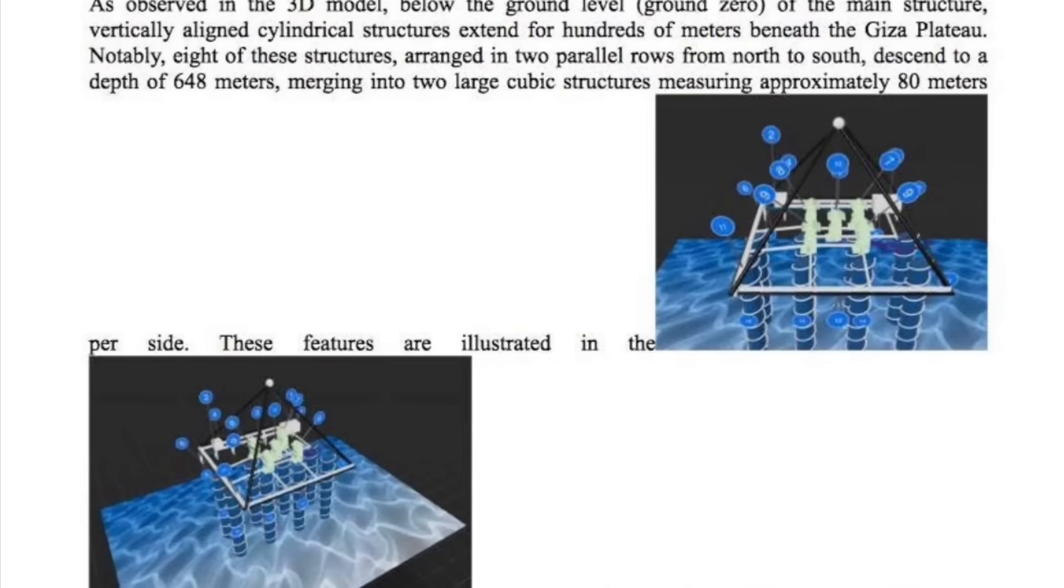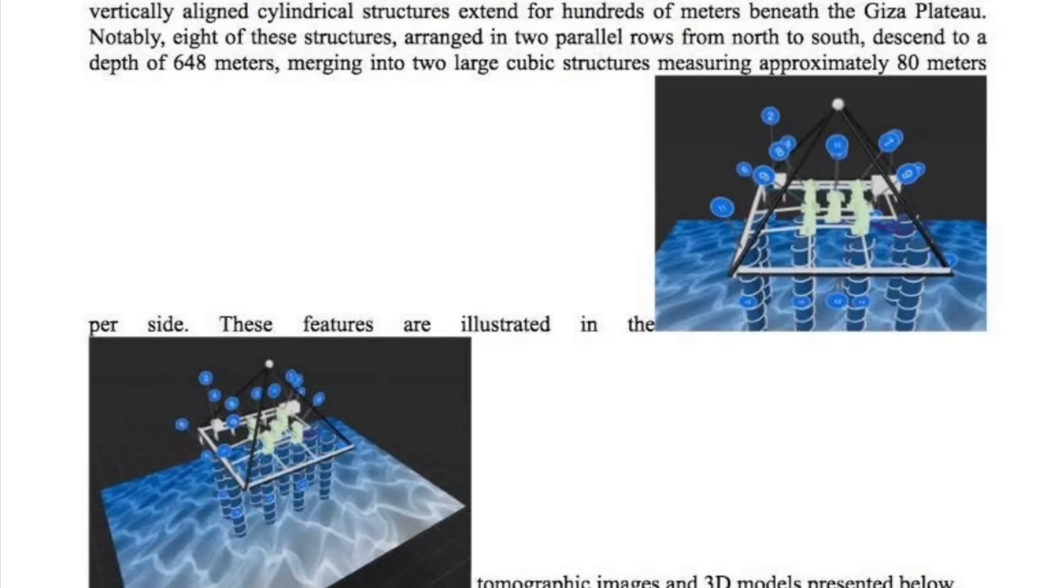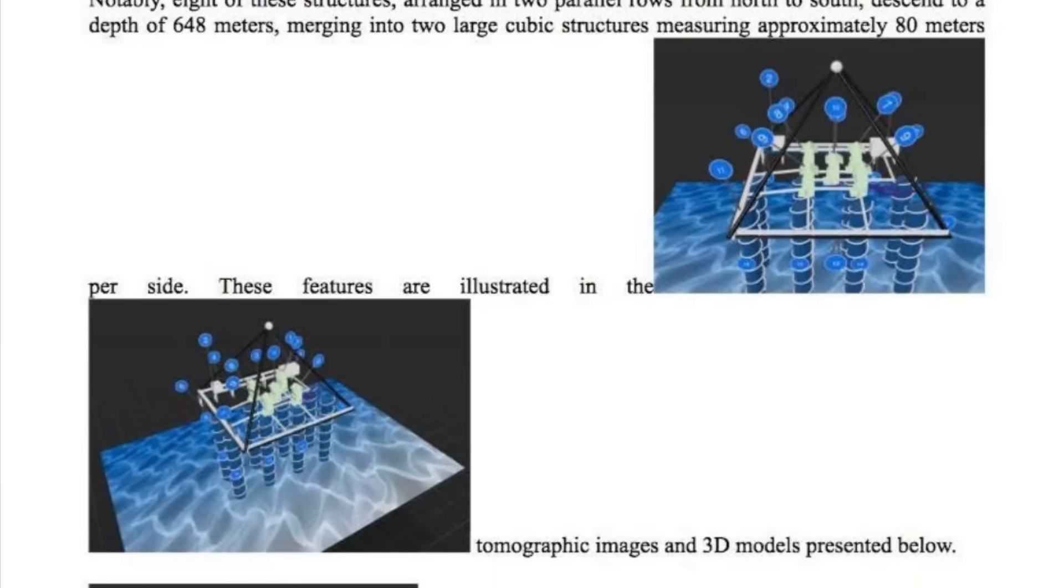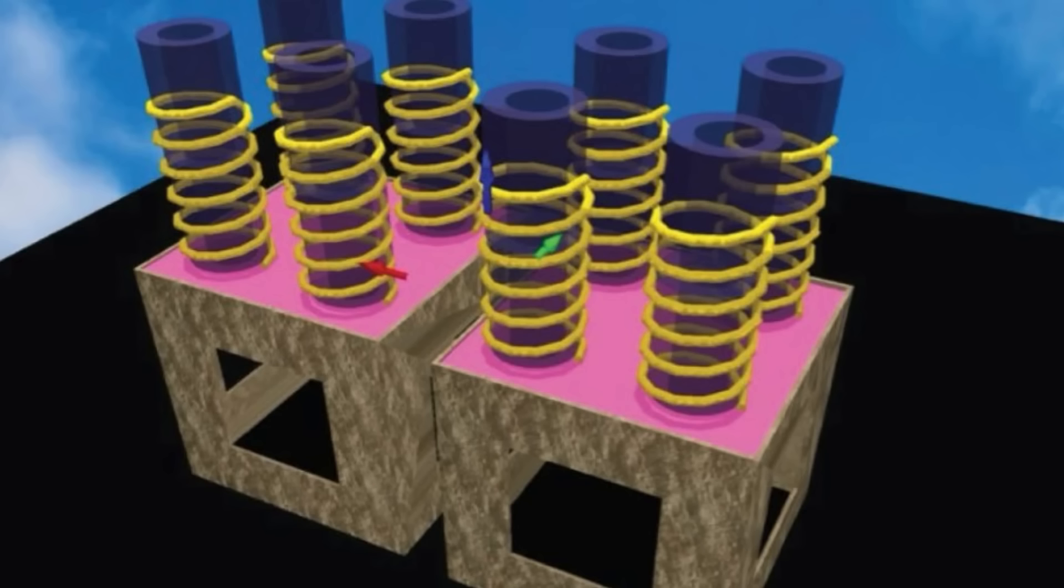As observed in the 3D model below the ground level, so ground zero of the main structure, vertically aligned cylindrical structures extend for hundreds of meters beneath the Giza plateau.